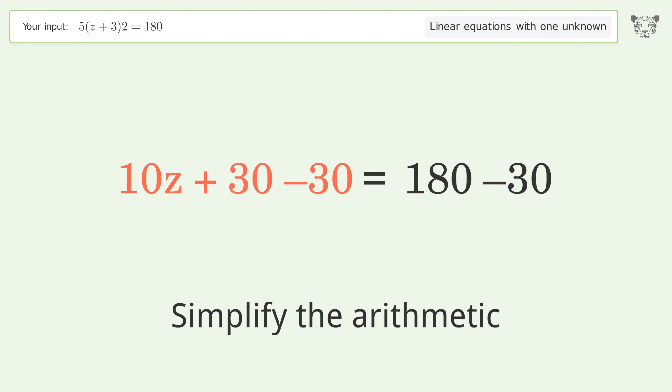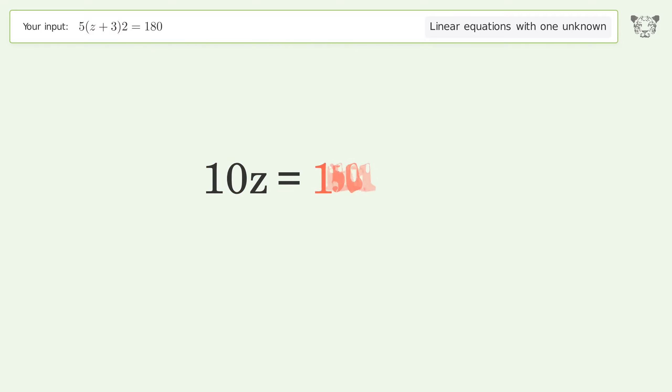Simplify the arithmetic. Isolate the z. Divide both sides by 10.